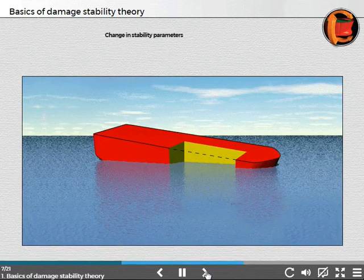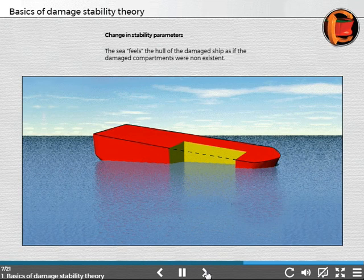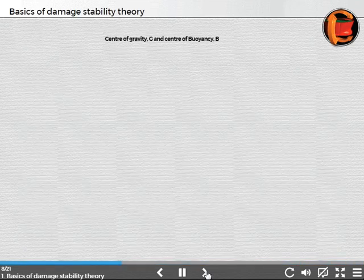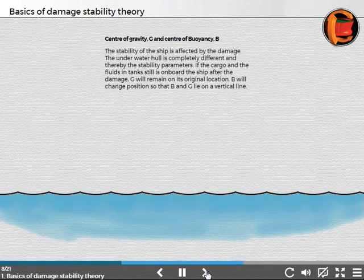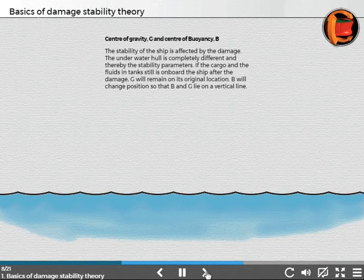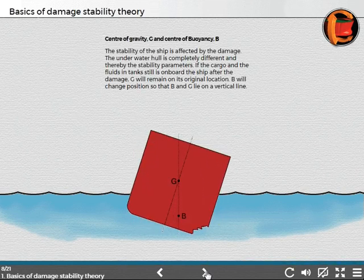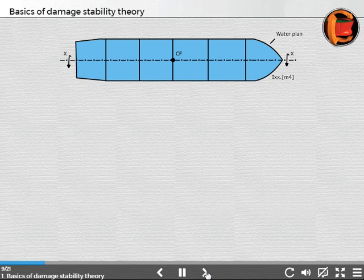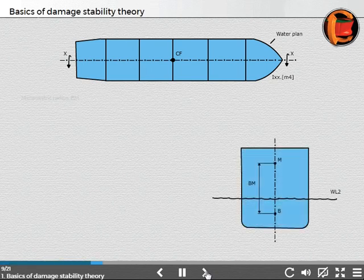Change in stability parameters. The sea treats the hull as if the damaged compartments were non-existent. The center of gravity G and center of buoyancy B are critical. The stability of the ship is affected by the damage. The underwater hull shape changes the stability parameters. If cargo and fluids in tanks remain on board after damage, G will stay at its original location. B will change position so that B and G lie on a vertical line.